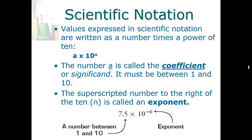The number a we're going to call the coefficient, sometimes called a significand, and it has to be a number between 1 and 10. The superscripted number n to the right of the 10 is called the exponent. Here is an example of a number written in scientific or exponential notation: 7.5, that's the coefficient, a number between 1 and 10, times 10 to the negative 6, which is the exponent.